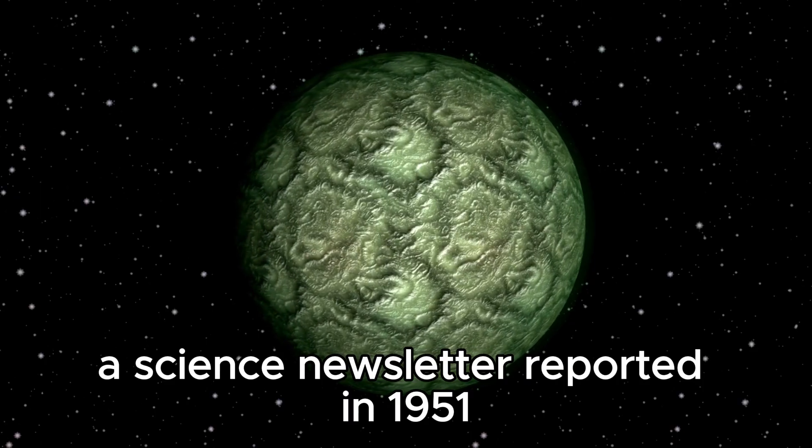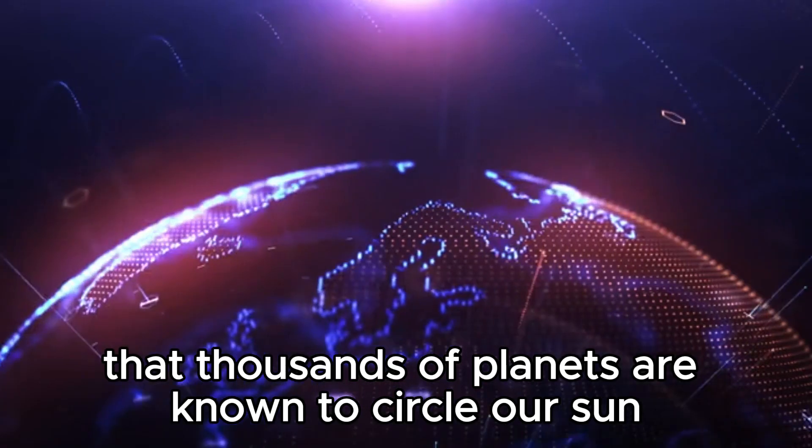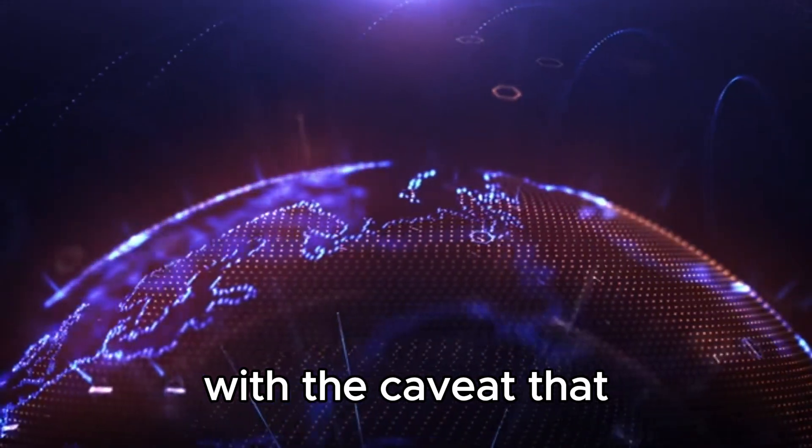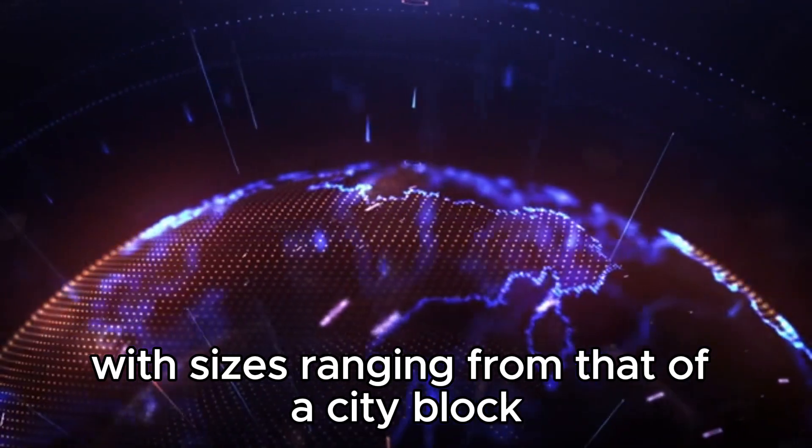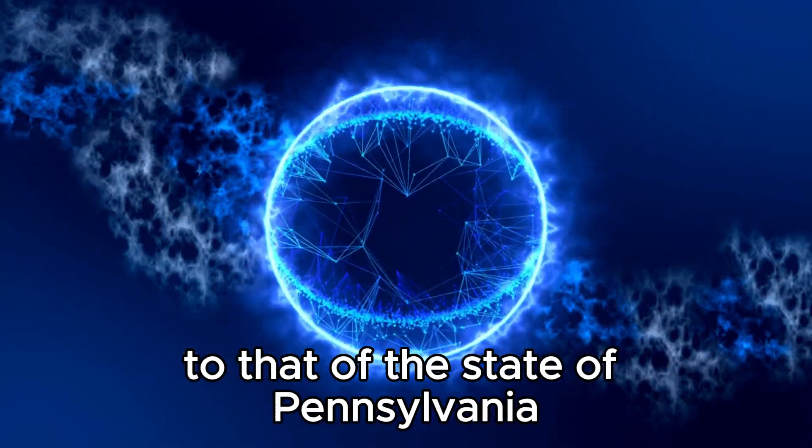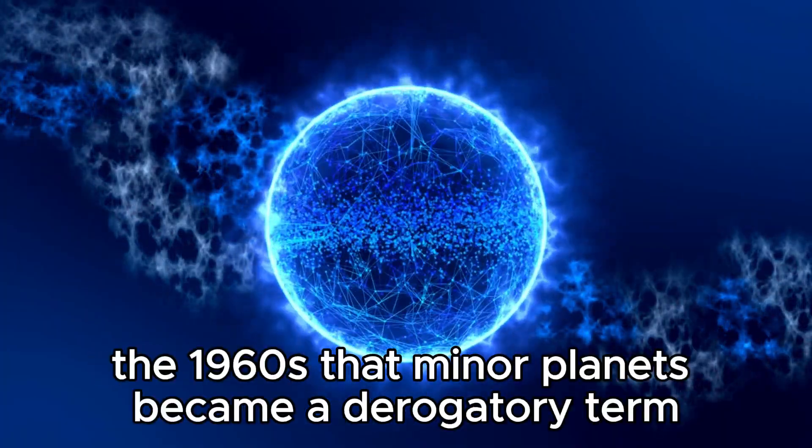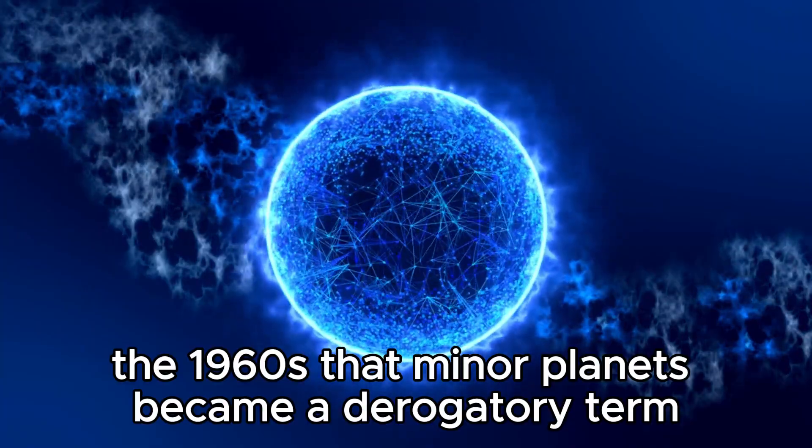A science newsletter reported in 1951 that thousands of planets are known to circle our sun, with the caveat that the vast majority of these planets were small fry, with sizes ranging from that of a city block to that of the state of Pennsylvania. It wasn't until the 1960s that minor planets became a derogatory term.